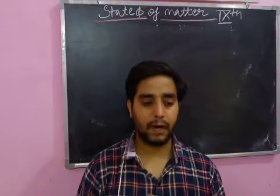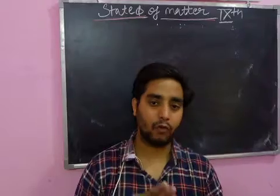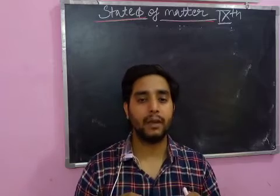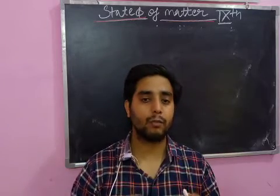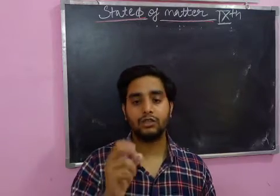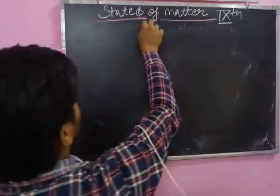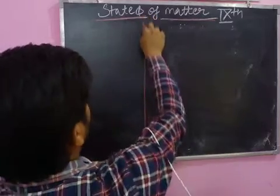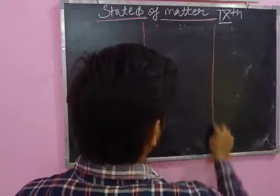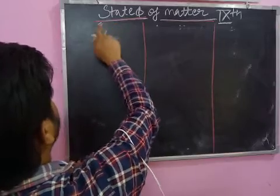So these are the five physical properties: first, particles are smallest; second, matter is made up of particles; third, particles have space between them; fourth, particles of matter are continuously moving; fifth, particles of matter attract each other. Now I am going to explain the main three states of matter — solid, liquid, and gas.